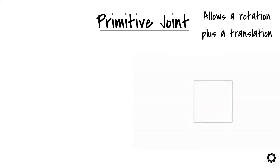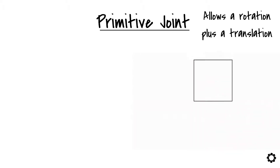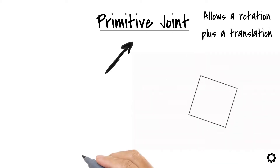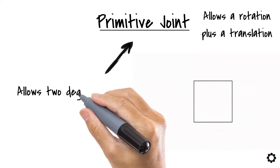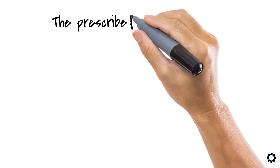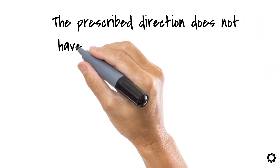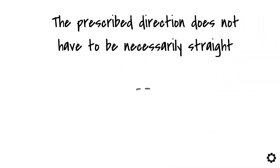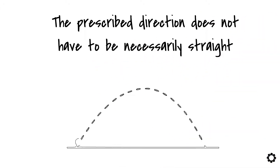Out of the three possible degrees of freedom in 2D or planar mechanisms, the primitive joint allows two degrees of freedom and restricts one. Something important to mention is that the prescribed direction does not have to be necessarily straight. It can be a curve — it can translate along a curve, even though this curve is circular.